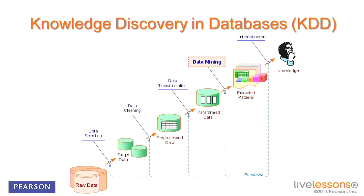Graphically, this is how it looks — this is my depiction of the KDD process. You might see different pictures representing the same thing, but this is my version. It all starts at the bottom left corner with raw data — data you have access to within your organization, over the internet, or purchased from other data repositories. This raw data can be selected, organized, and extracted to include only what's needed for the specific goal you have in mind. We call this process data selection — it's the selection of what parts and pieces of data are relevant to the problem you're trying to address.